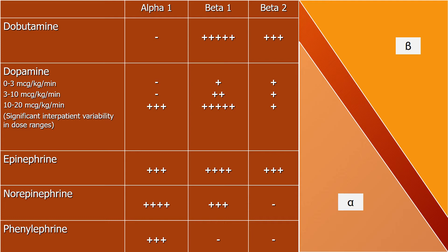This chart demonstrates the different vasopressor agents and their effects on alpha-1, beta-1, and beta-2 receptors. Dobutamine has more of an effect on beta-1 and beta-2. Dopamine affects all receptors in a dose-dependent manner: at intermediate doses it has more effect on beta-1, and at higher doses also on alpha-1. Epinephrine affects all receptors equally. Norepinephrine has more effect on alpha-1, causing vasoconstriction. Phenylephrine is a pure alpha-1 agonist.